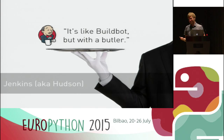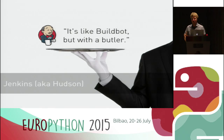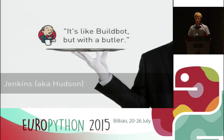The downside is it's written in Java, and as a Python developer you always prefer beautiful Python software. But Java is a decent language and Jenkins is a very good software product. It has a huge open source community with many plugins, and it's backed by a company called CloudBees that offers commercial services on top. We're really happy with it.